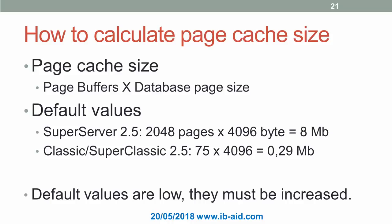For example, the default value for SuperServer in Firebird 2.5 is 2048 pages, so the page cache size for all connections will be around 8 MB. For Classic, the default value is 75 pages and for each connection cache will be around 300 KB. Of course, these default values are very low and we need to increase them.